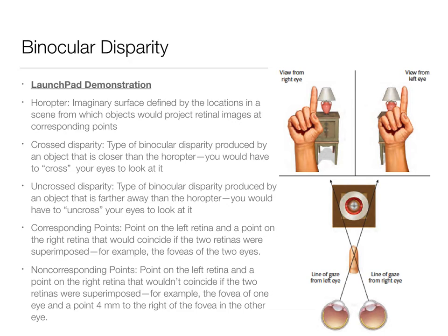The differences between what each retina is seeing is called binocular disparity. And again, this is primarily what this lecture is about and how your eye really makes sense of this binocular disparity. There's a launch pad demonstration that I want you to go through — I think it'll do a really good job of walking you through the different vocabulary and also how these different things work. So we have crossed and uncrossed disparity, and this is the idea that it gives us information about depth based on these things. Go through the launch pad demonstration and it will walk you through all of these various things.